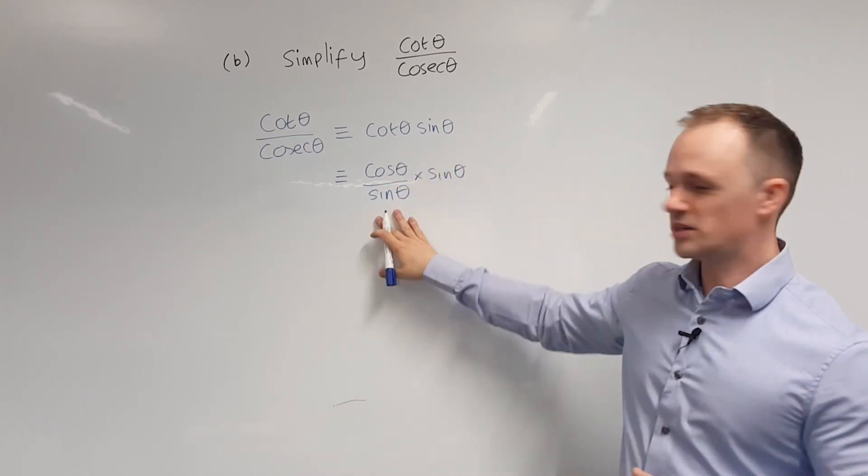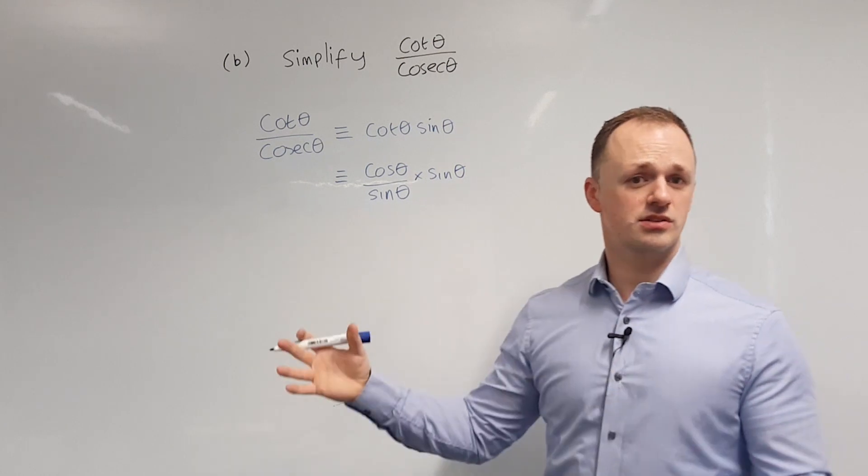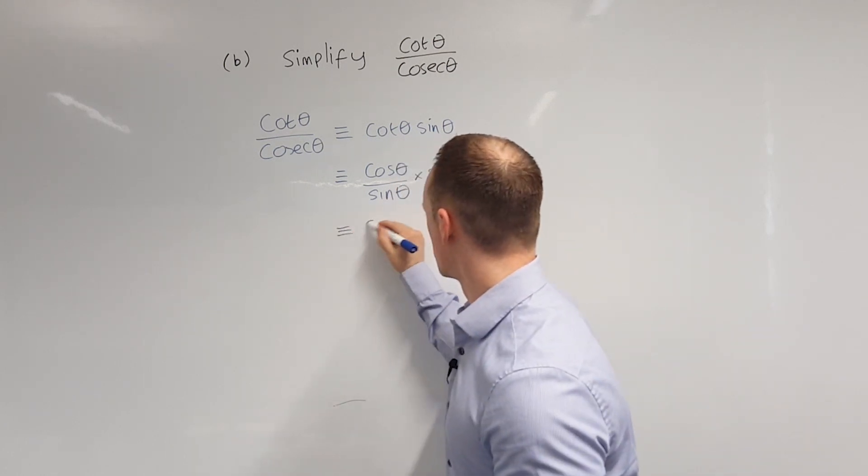As we're multiplying by sin theta and then dividing by sin theta that's going to cancel out leaving us with cos theta.